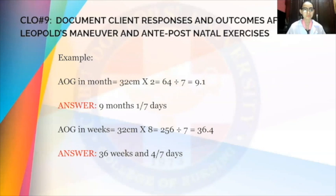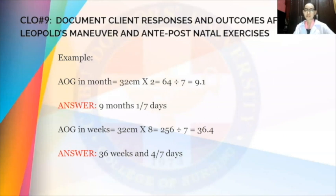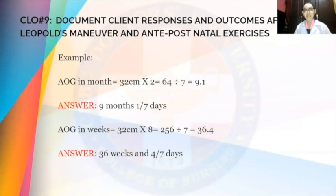We have here an example. For AOG in months, with a fundal height of 32 centimeters: 32 multiplied by 2 equals 64, divided by 7 gives 9.1. So the AOG becomes 9 months and 1 over 7 days. For AOG in weeks: 32 centimeters times 8 equals 256, divided by 7 equals 36.4. So the AOG becomes 36 weeks and 4 over 7 days.